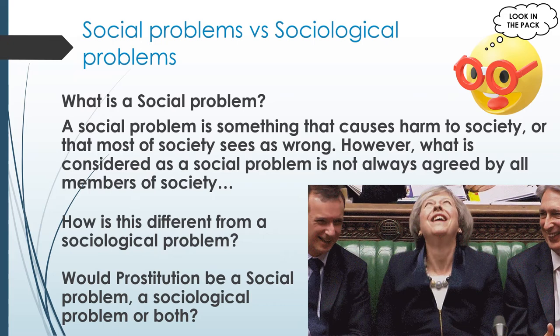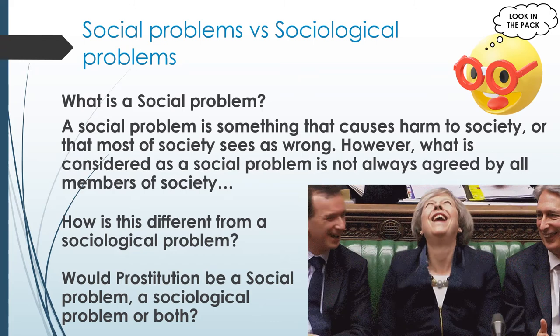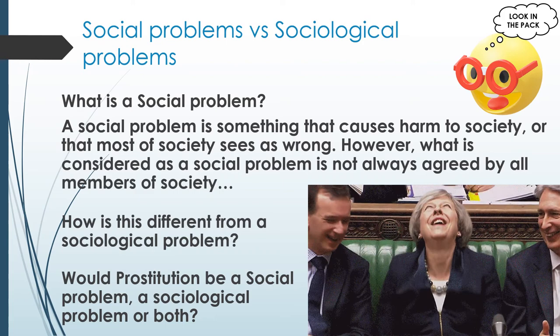A sociological problem is different — it's something that sociologists are concerned with or interested in. Almost all social problems will be a sociological problem, but not every sociological problem is a social problem. To put this in context, let's say prostitution is a social problem — could it also be a sociological problem?